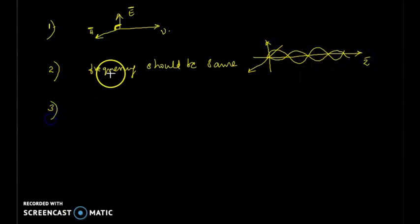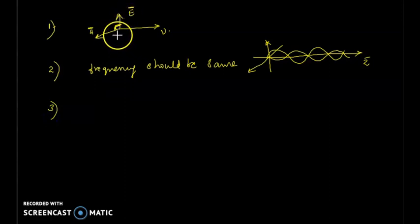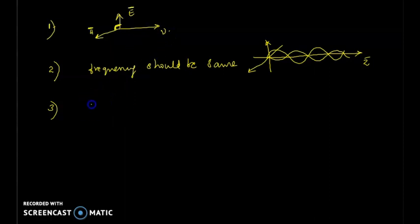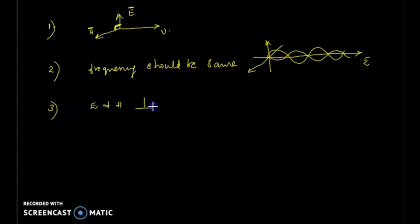Property number three: the direction of E and H should not change at any point, in any plane. In fact, E and H should be perpendicular to each other. Both E and H — their direction should not change — and both should be perpendicular to the velocity of propagation.